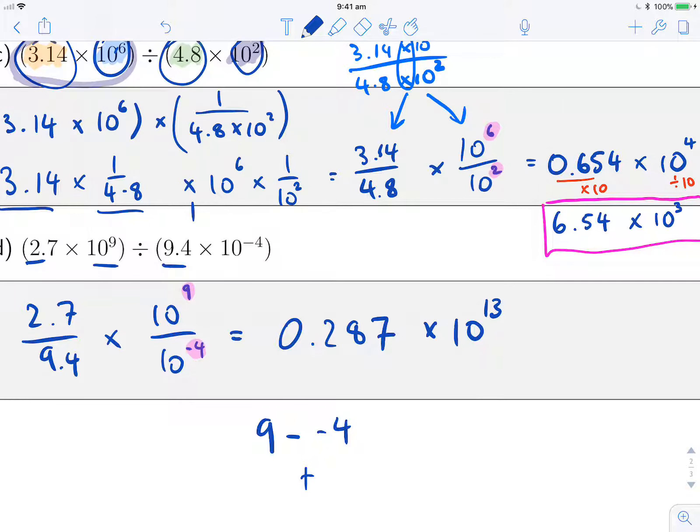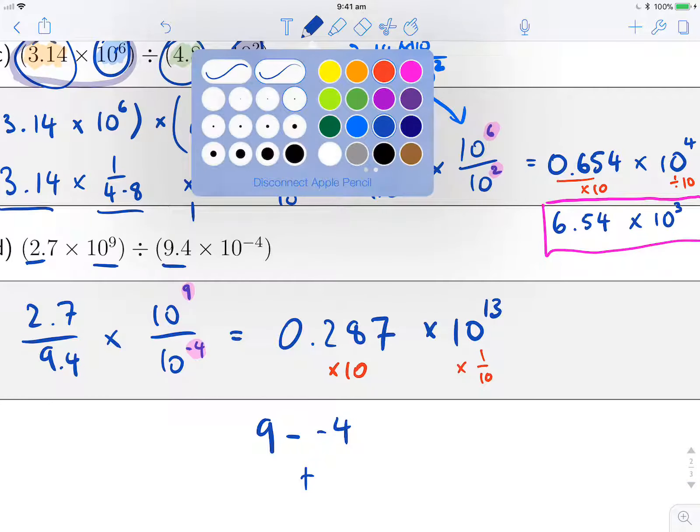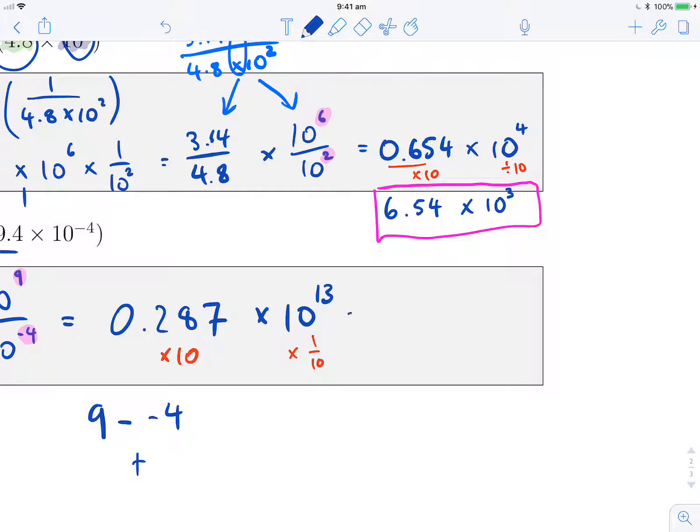And now again, we need to make this number 10 times bigger, we need to make this number 10 times smaller, and so when we rewrite it in standard scientific notation, we'll have 2.87 times 10 to the 12.